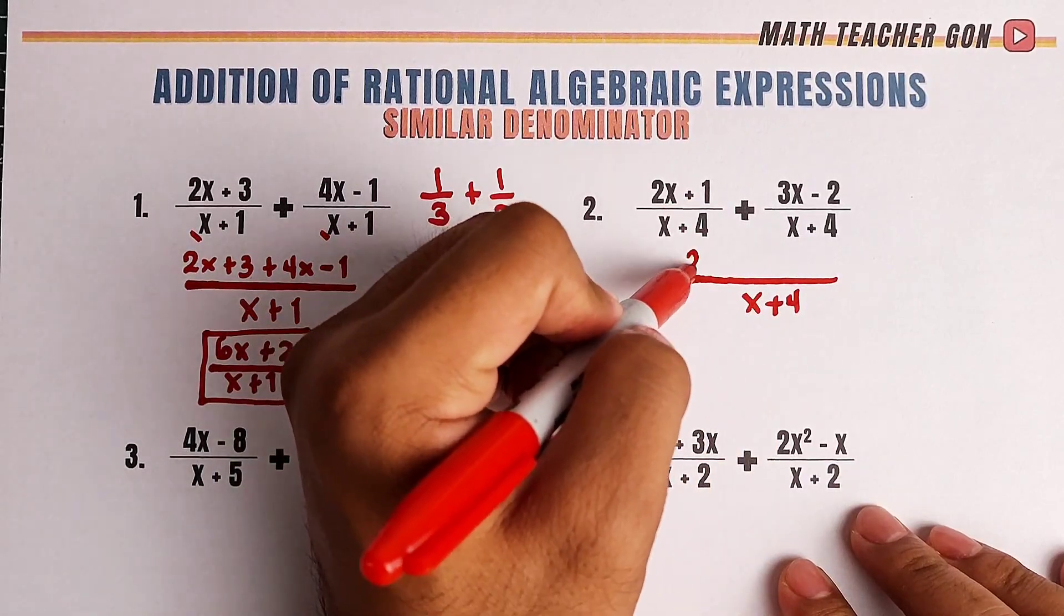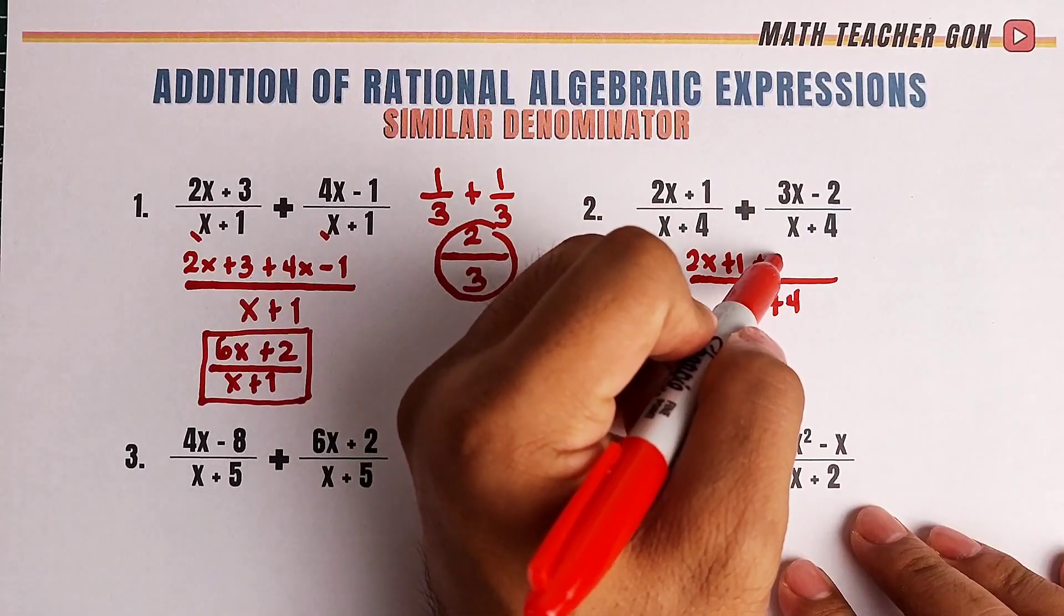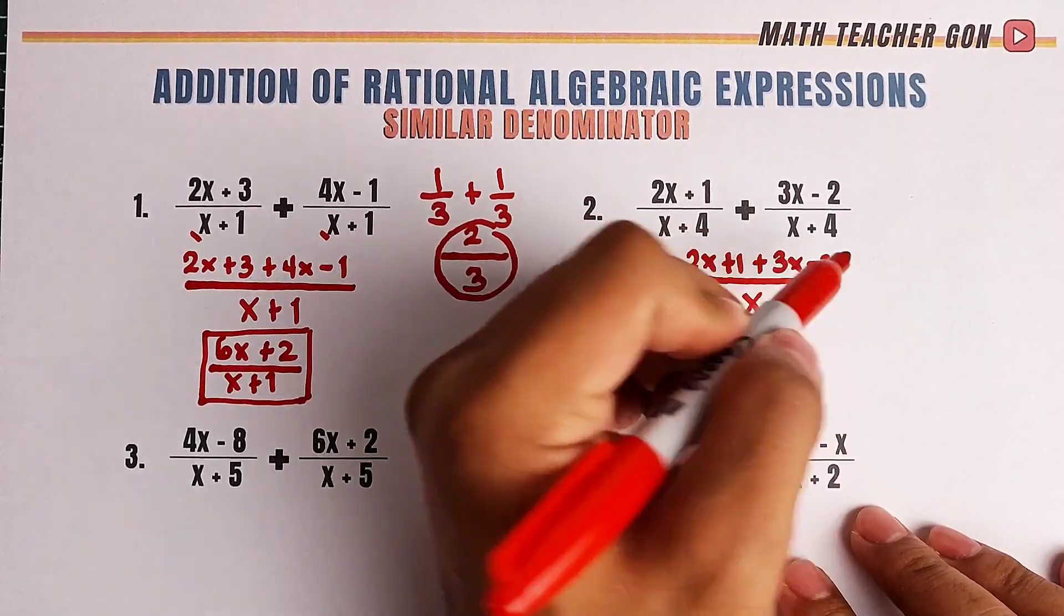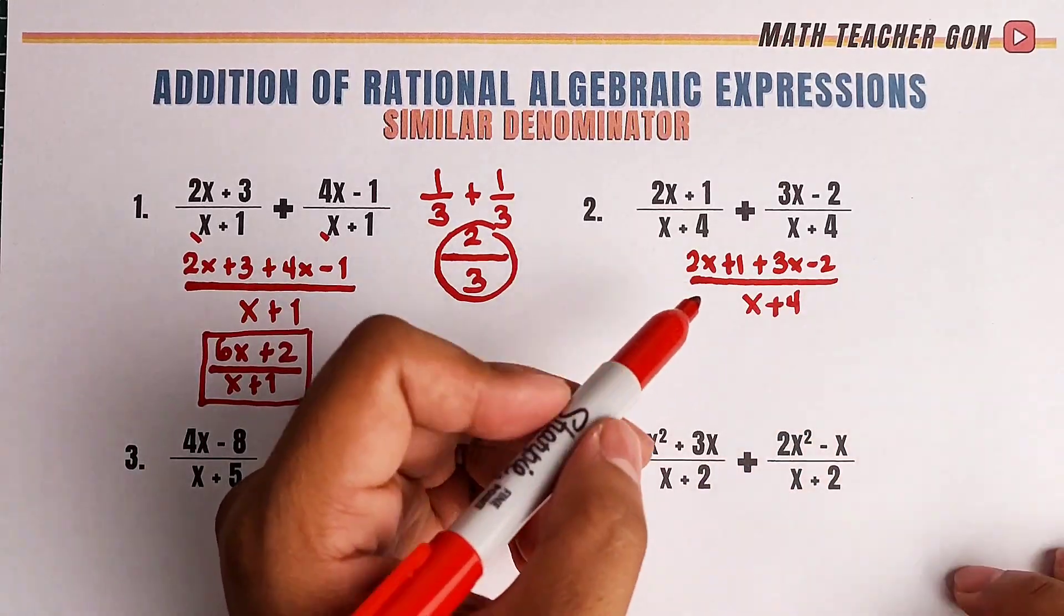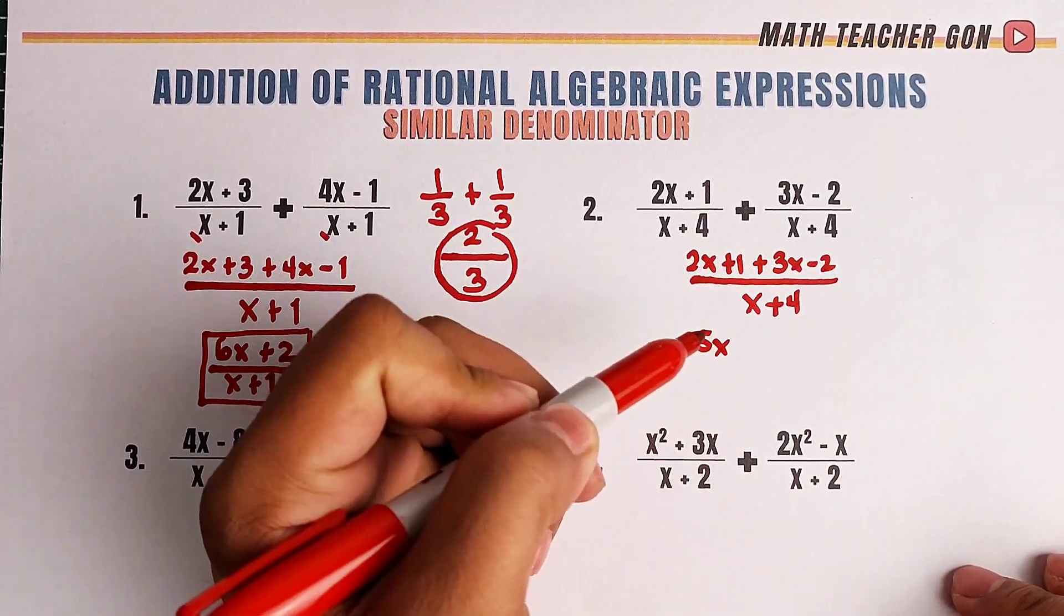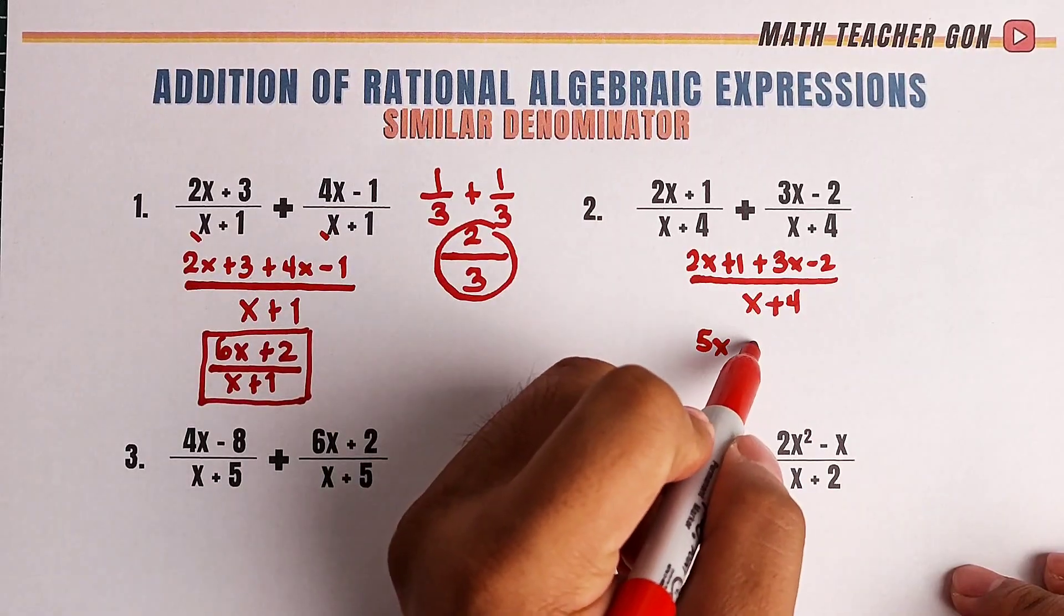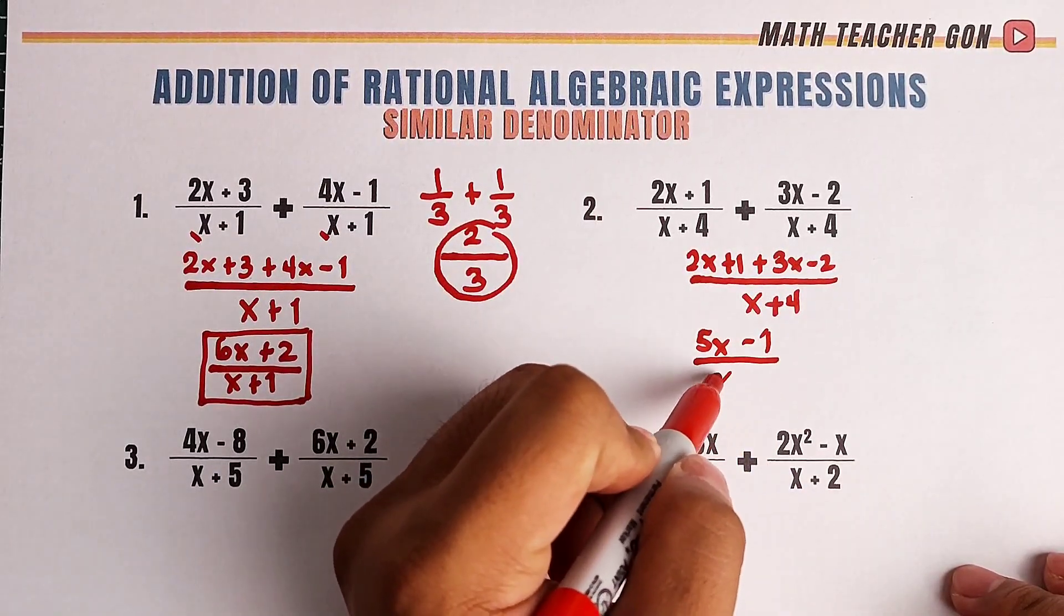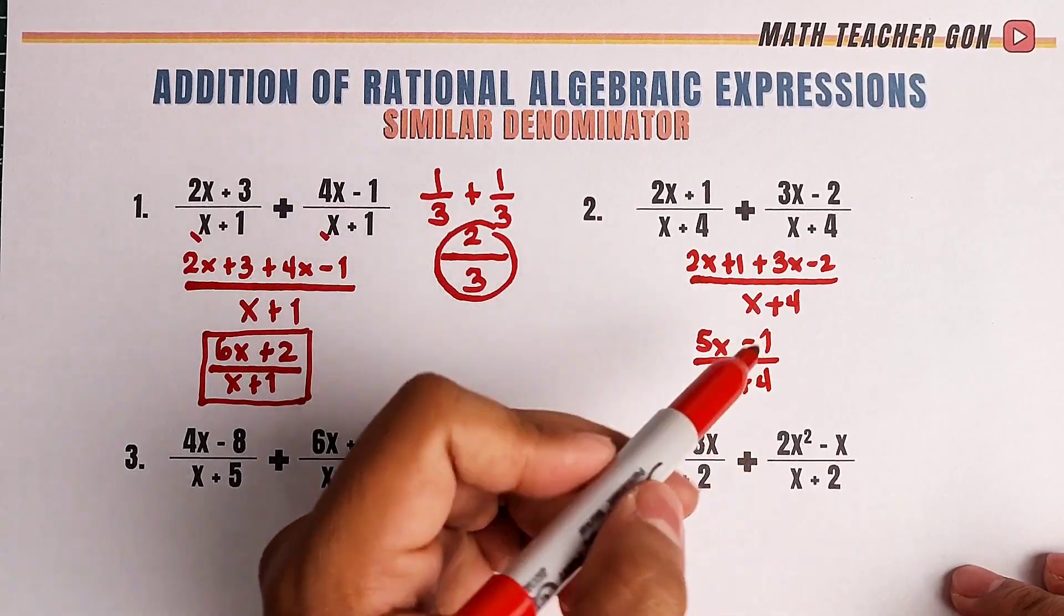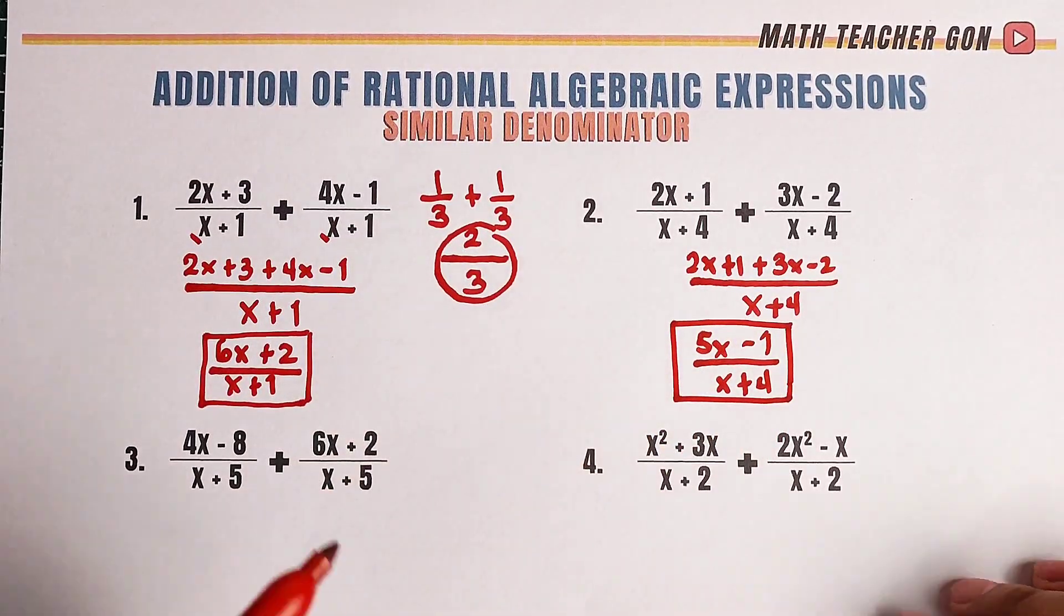Then put it here, 2x plus 1 plus 3x minus 2. Now, combine these terms, 2x plus 3x is definitely 5x. 1 minus 2, that would be negative 1 over your common denominator x plus 4. And this is now the answer for example number 2.